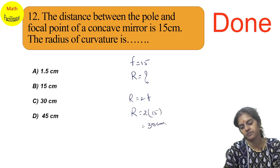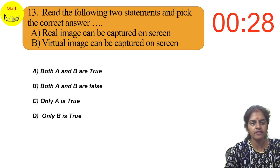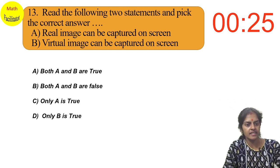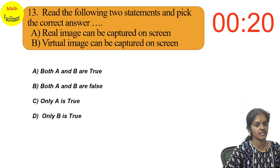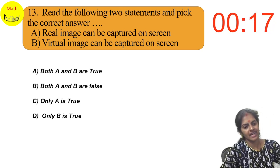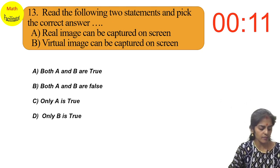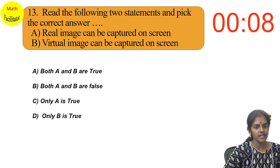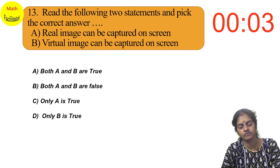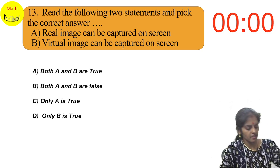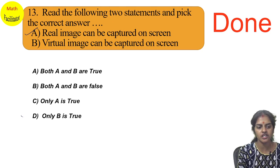Read the following two statements and pick the correct answer: A — real image can be captured on a screen; B — virtual image can be captured on a screen. The correct answer is that only A is true. Only a real image can be captured on a screen; a virtual image cannot.